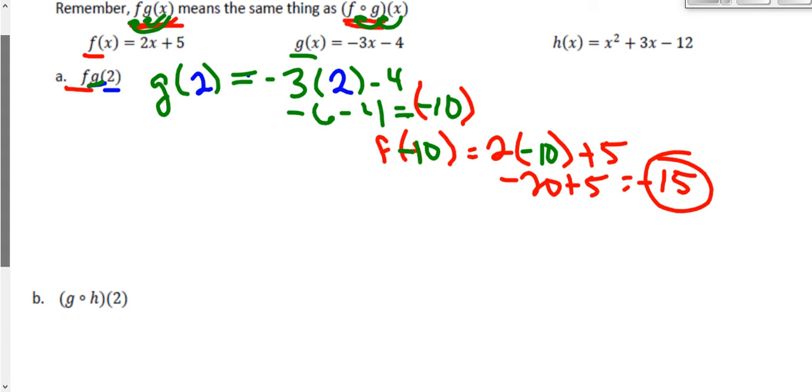Up next, I want to find g of h of 2. Again, that means I have to start with this inside number 2. And I'm going to plug it in, working my way to the left. So I'm going to take 2 and plug it into h, which is that function right there. So let's go ahead and find h of 2. I have to do 2 squared plus 3 times 2 minus 12. So let's go ahead and plug in that 2 everywhere we saw x. So h of 2, 2 squared, 3 times 2, minus 12.